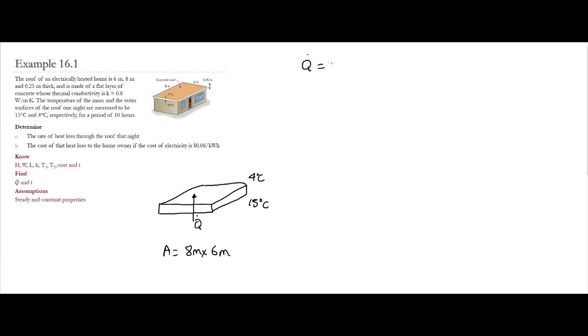Q dot is equal to K A (T1 minus T2) divided by L, where L is the distance between the two surfaces that we're dealing with. In this case, the value of L is equal to 0.25 meters.